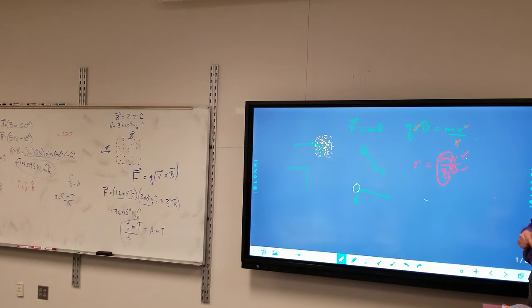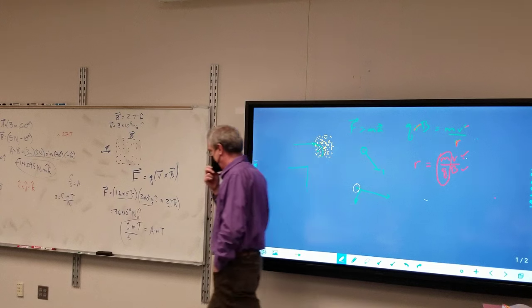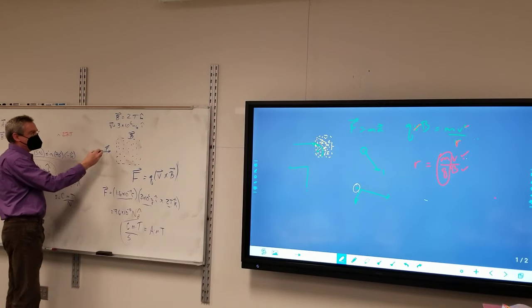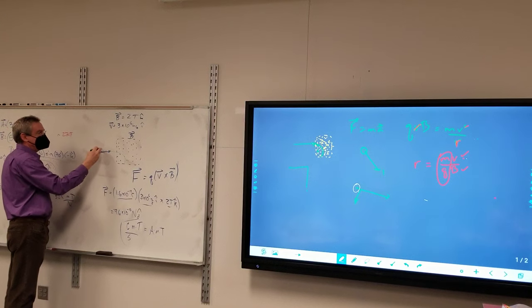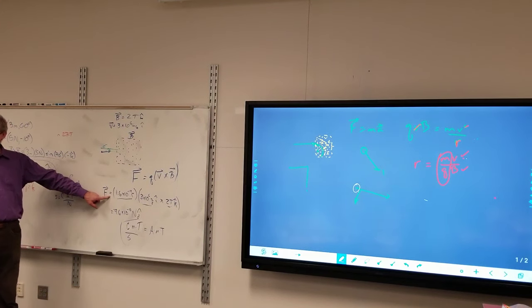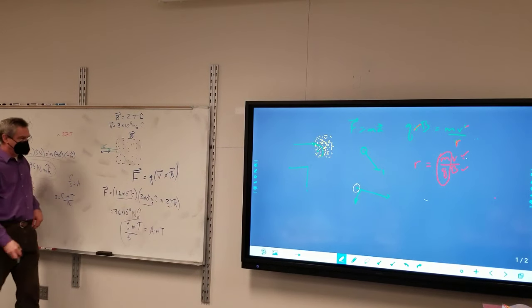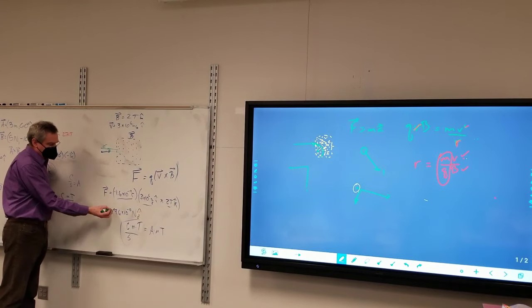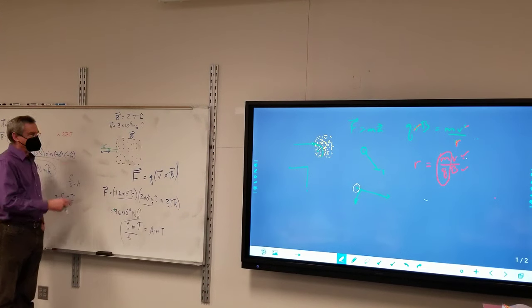And then you set up a computer program to run through the analysis because we're talking trillions of potential. So the proton's going to cruise around like that. Suppose instead it's an electron that gets shot into. What's changing here? In the charge. So that becomes negative. That becomes positive. And so which way is the electron going to move?